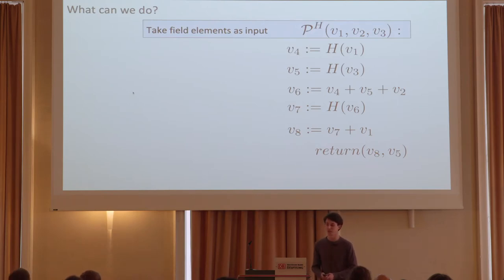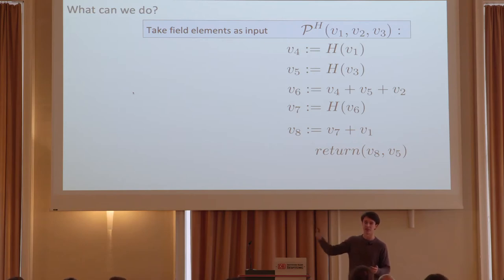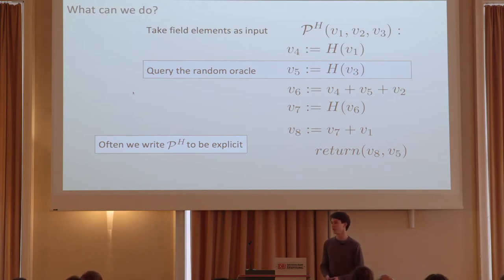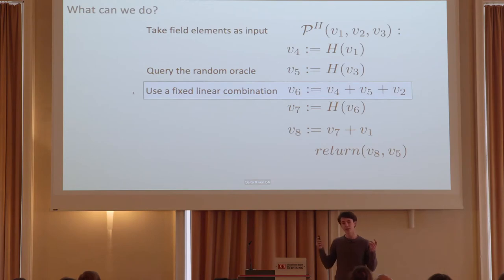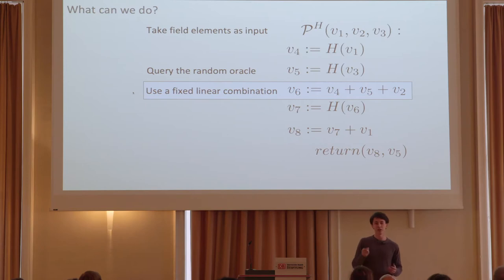What are we actually able to do in a lineecrypt program? We can take inputs to our functions — these are inputs from a field. We can also sample randomly from the field, though in those cases we consider those random samples to be included in the inputs. We can take field elements and send them through a random oracle to get new field elements. To make the association explicit, we write ph. We can also take field elements from inputs or oracle queries and apply some fixed linear combination to combine them into new field elements.